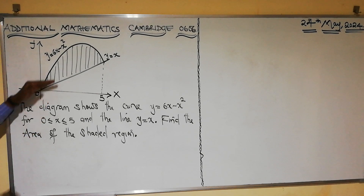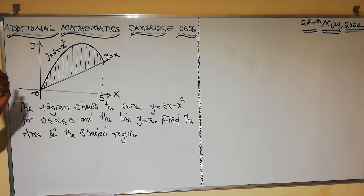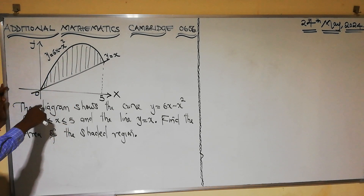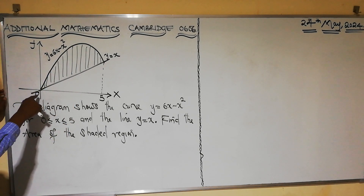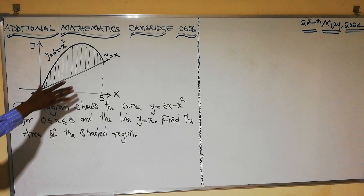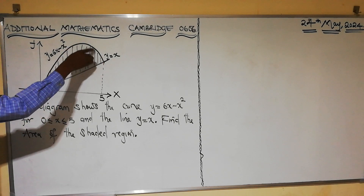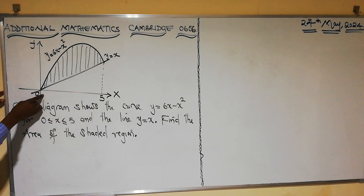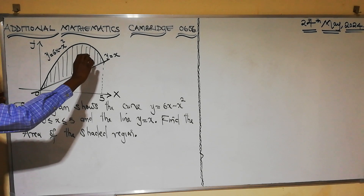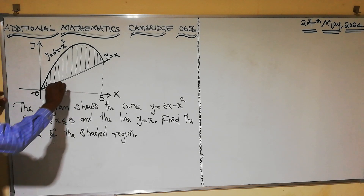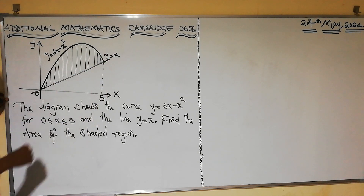The goal here is to find the area of this shaded region. The area of the shaded region can be obtained by integrating the upper function — in this case the curve — from the ordinates 0 to 5. The value we get is the area under the curve. But to get the area that is just shaded, we are going to take the integral of the curve minus the integral of the line from 0 to 5.